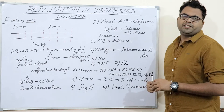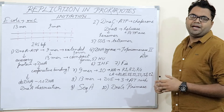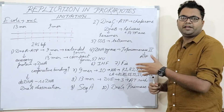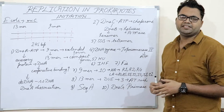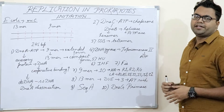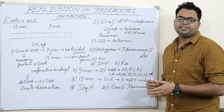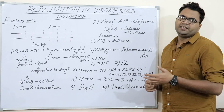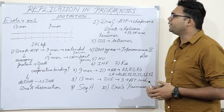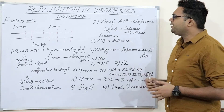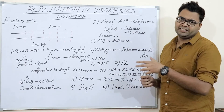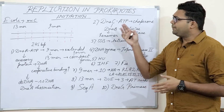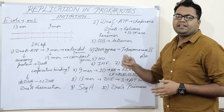Hello friends, welcome to yet another intriguing edition of Biology Made Easy. Today we will be bringing you a very ecstatic topic known as DNA replication in prokaryotes. The model organism is E. coli, which has 6.4 million DNA base pairs. Today we will be discussing exclusively about the initiation part of replication in prokaryotes, especially in E. coli.